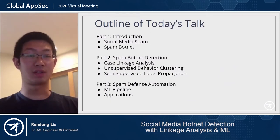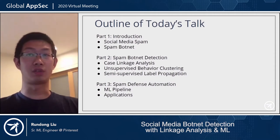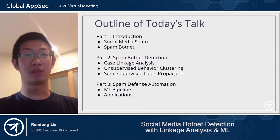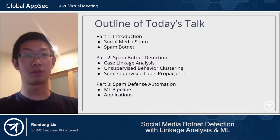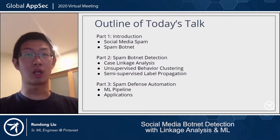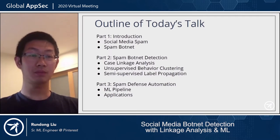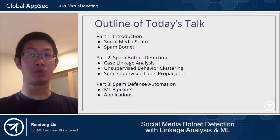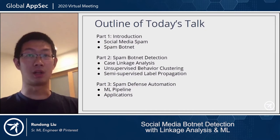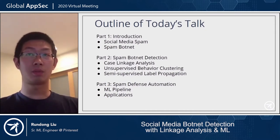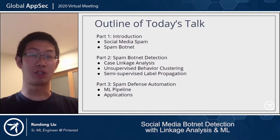The outline of today's talk contains three parts. First, we'll give an introduction about social media spam — what it is, and particularly the spam botnet problem, which is a major threat for social platforms. Second, we'll build a botnet detection solution, borrowing the concept of case linkage analysis from crime investigation, and build two machine learning models: an unsupervised behavior clustering model and a semi-supervised model based on label propagation. The last part is around spam defense automation.